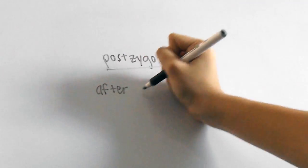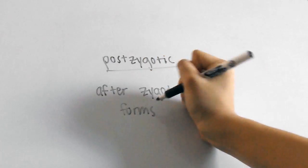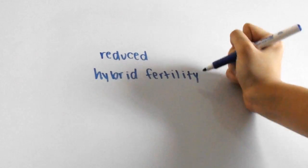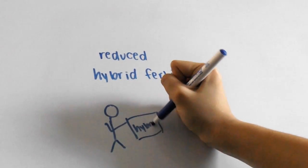We've also got three postzygotic barriers, or postzygote, meaning after the zygote forms. We already talked about the horse and the donkey, and that's an example of reduced hybrid fertility.